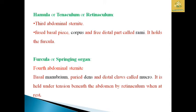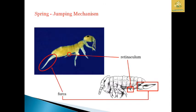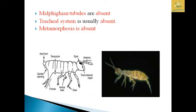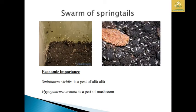The furcula is held under tension beneath the abdomen by the retinaculum when at rest. The spring mechanism is used by these insects for jumping. Malpighian tubules are absent in this insect and the tracheal system is also absent. Metamorphosis is also absent in these types of insects.